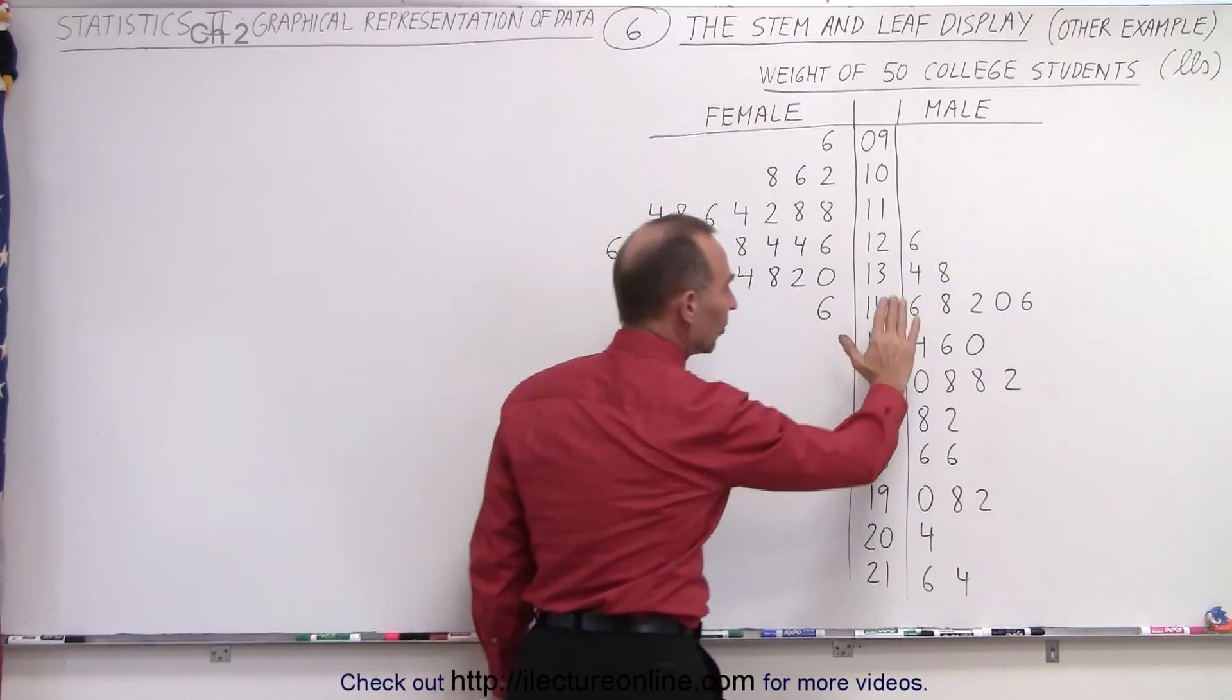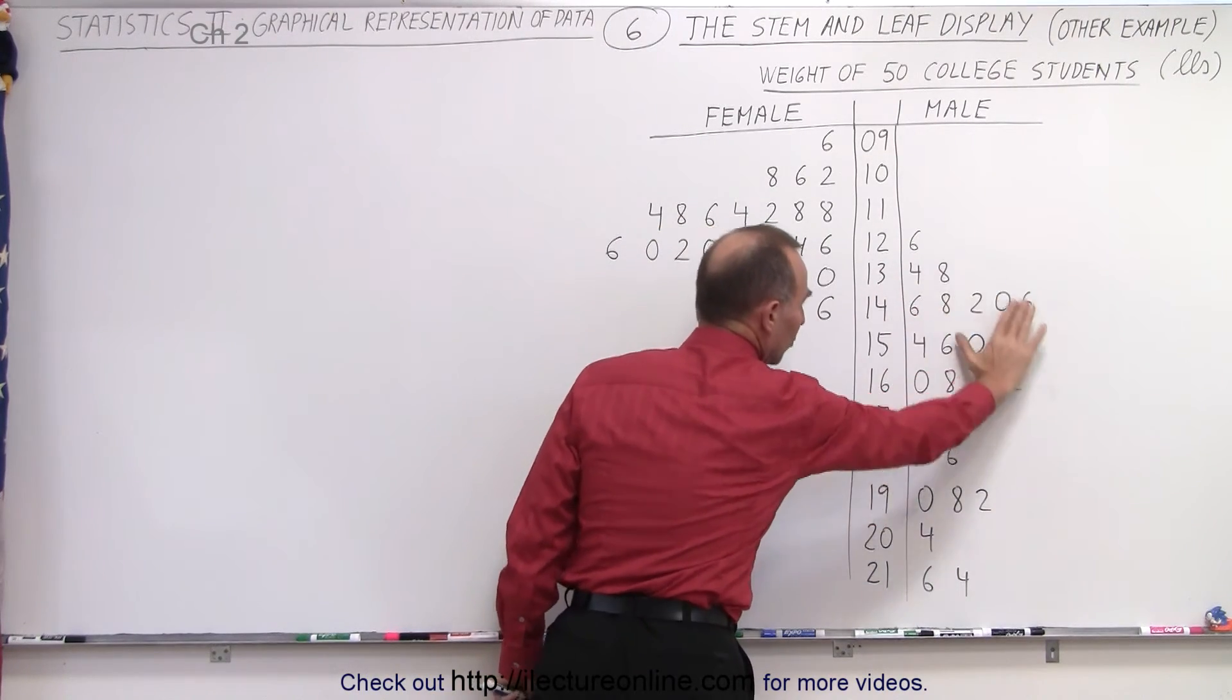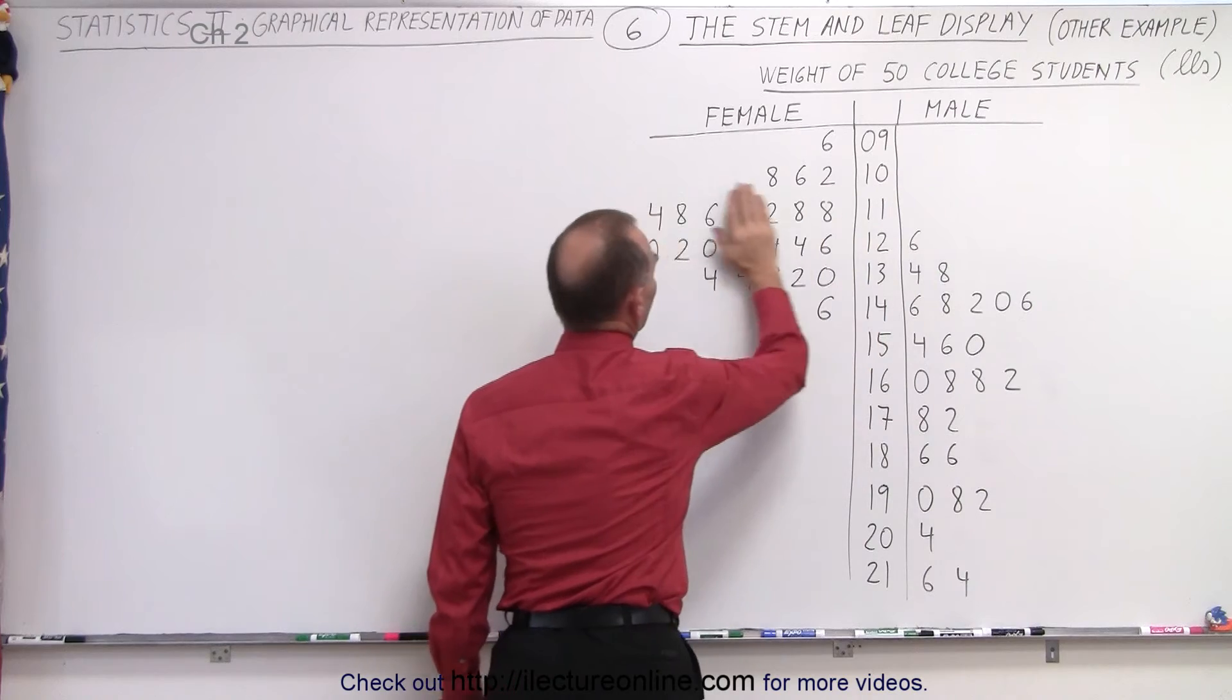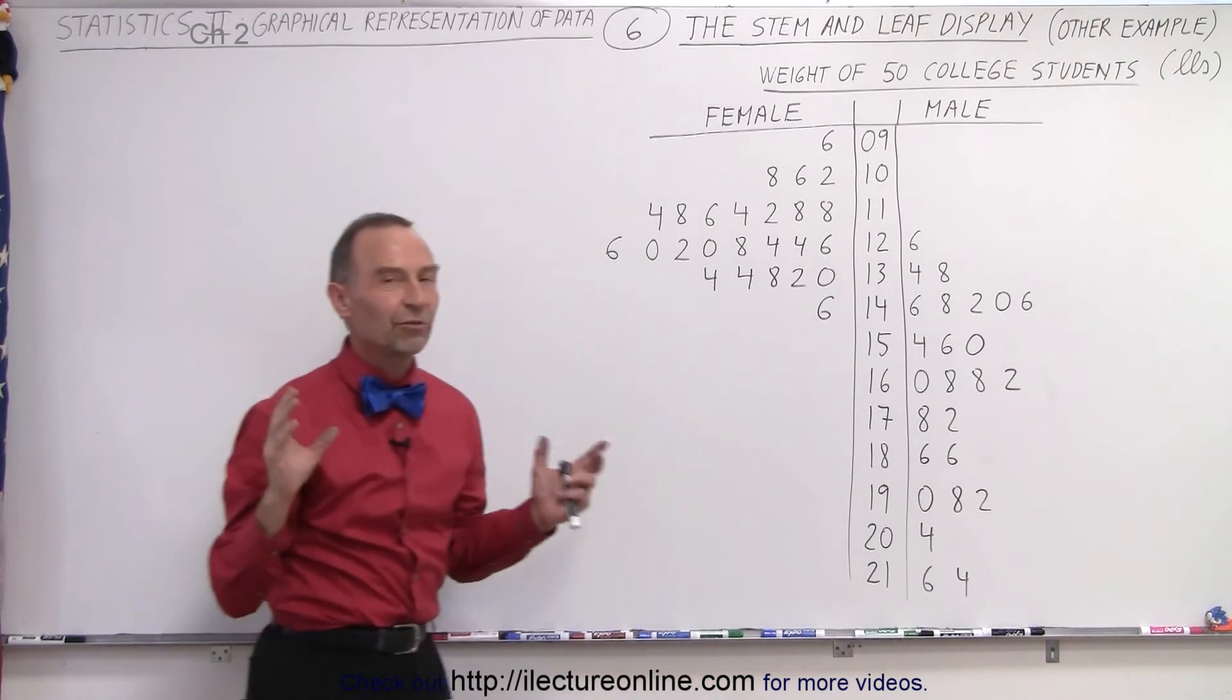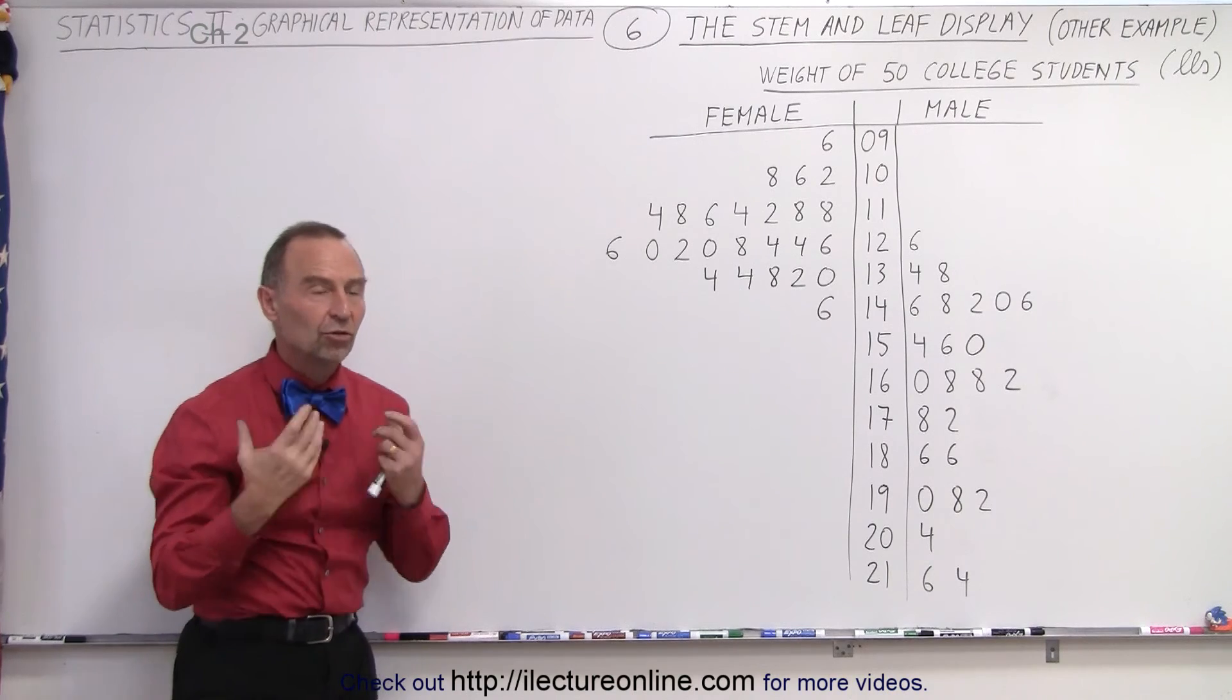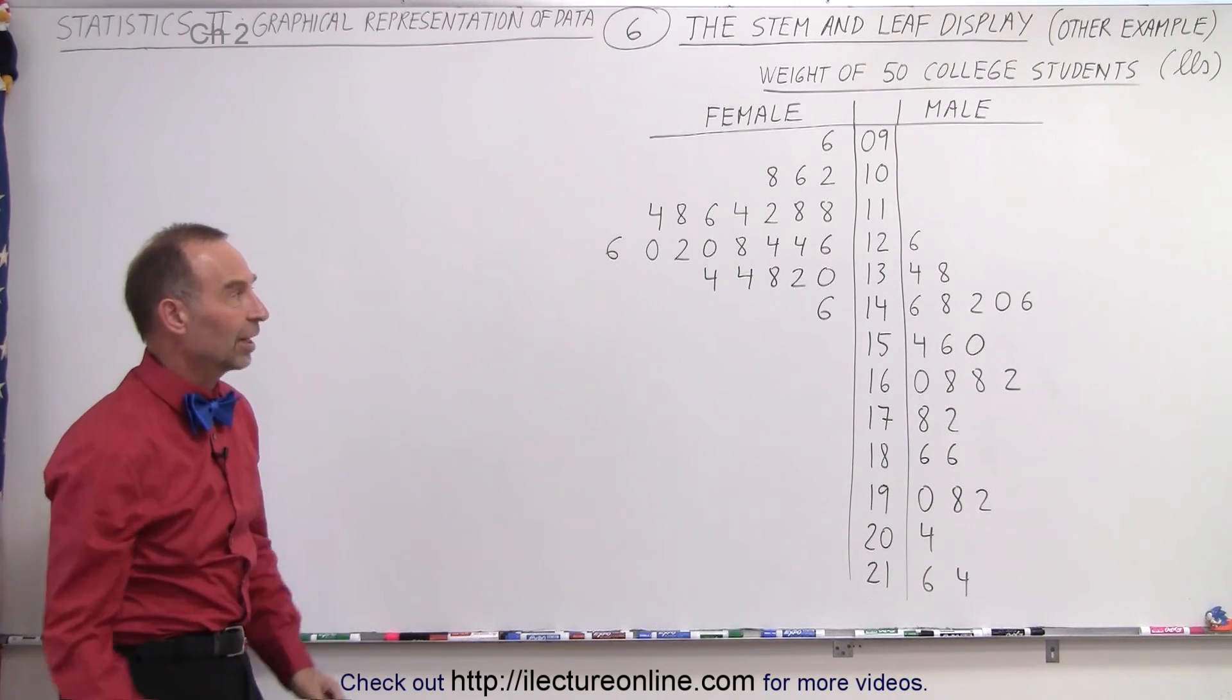Also for the males, you can see that the typical weight falls more into this category, whereas for females the typical weight falls more into this category. So see how much information you can pull out of the graph just with a simple representation like that.